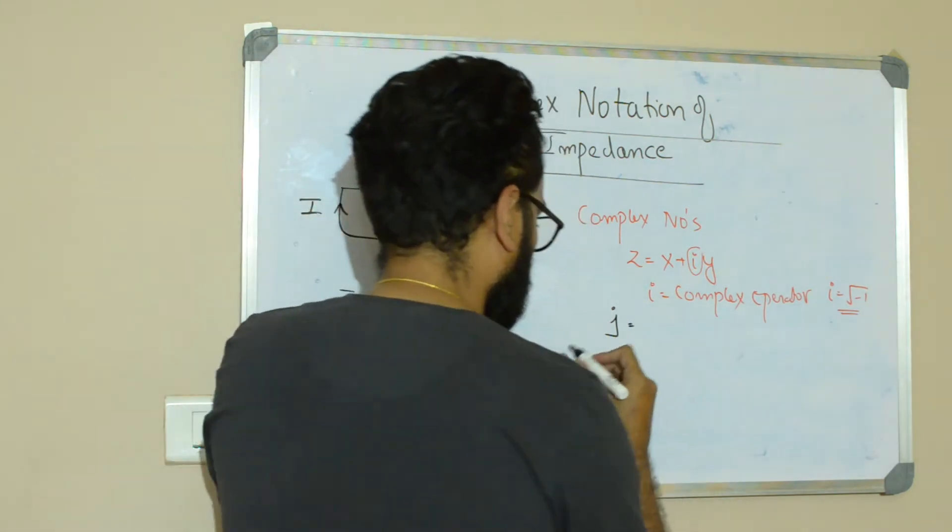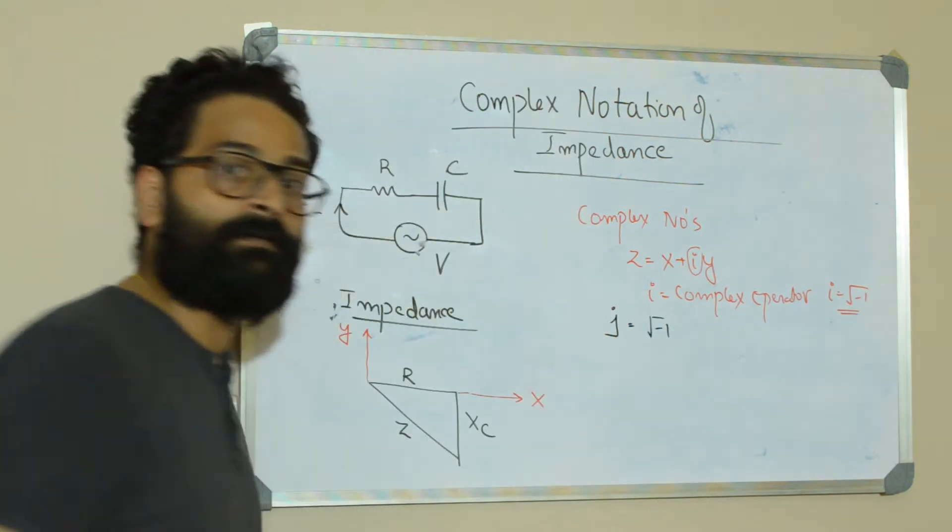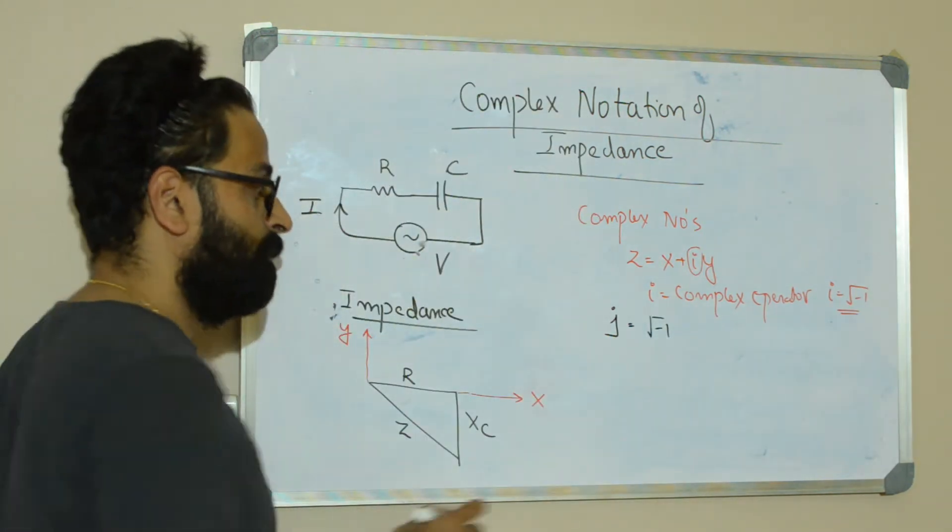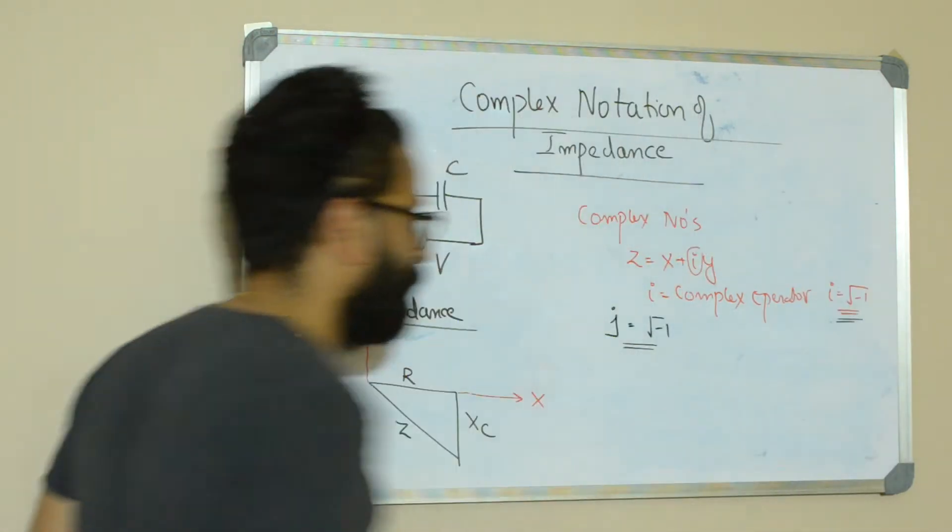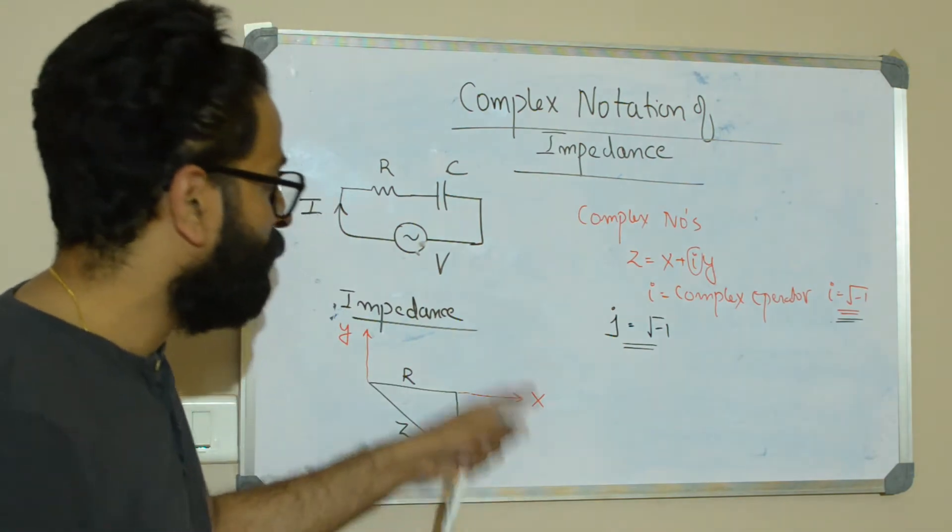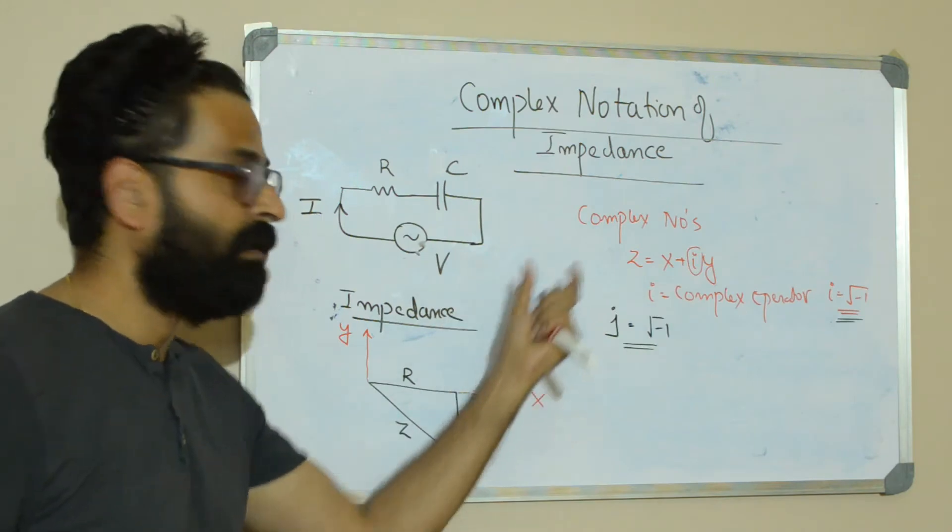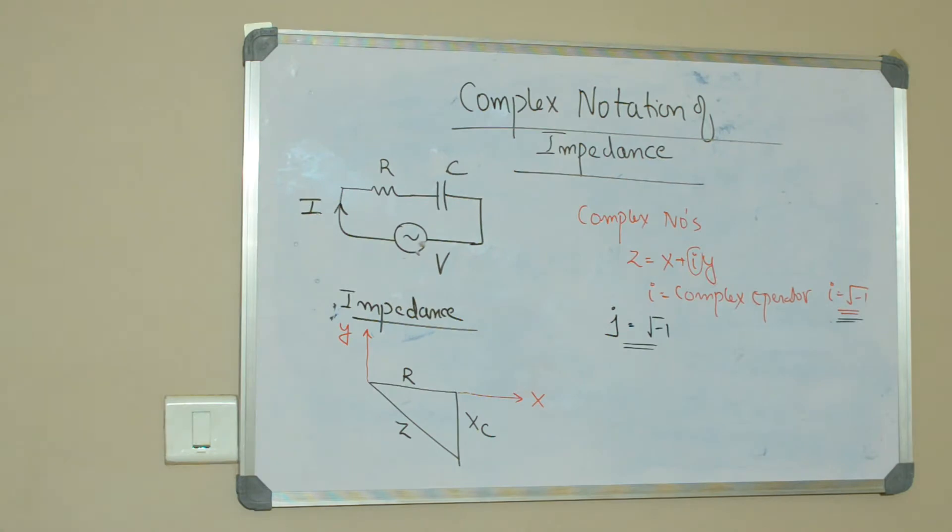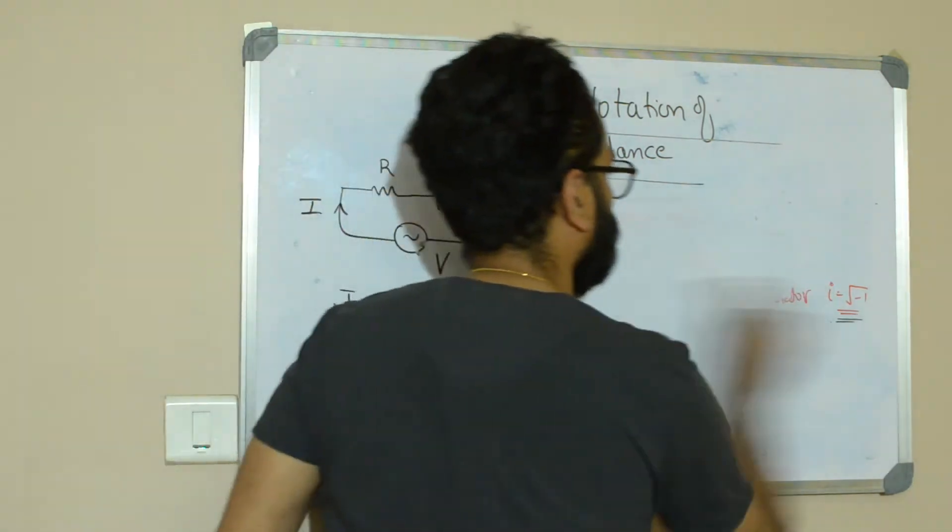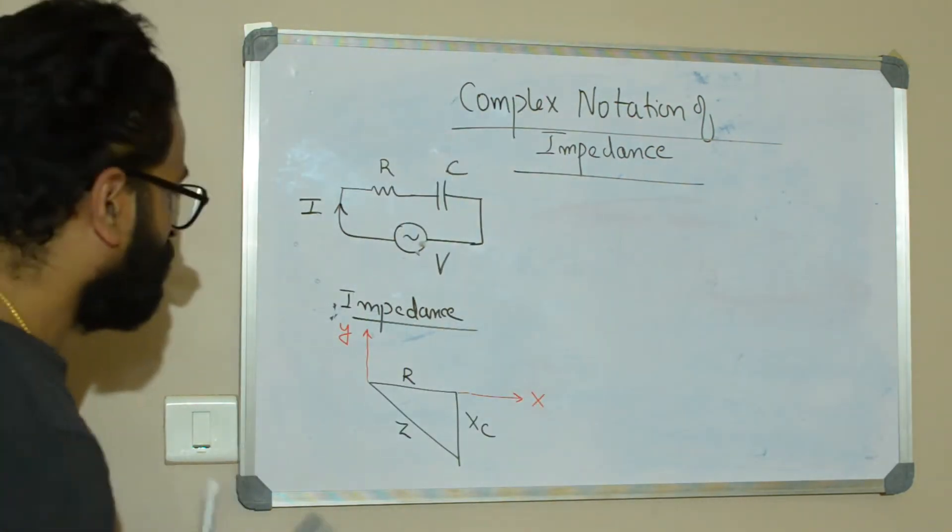So in place of I we take operator J, where J is basically square root of minus 1. So technically speaking, operator J is equal to operator I. We have used J in electrical engineering just to avoid the overlapping of operator I with instantaneous current.